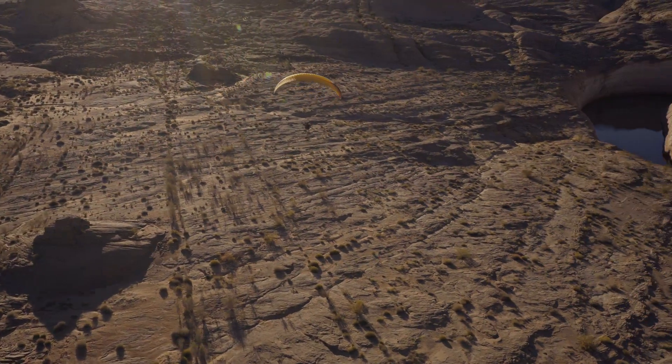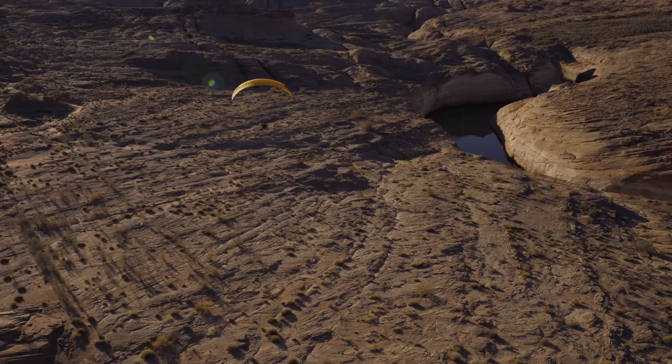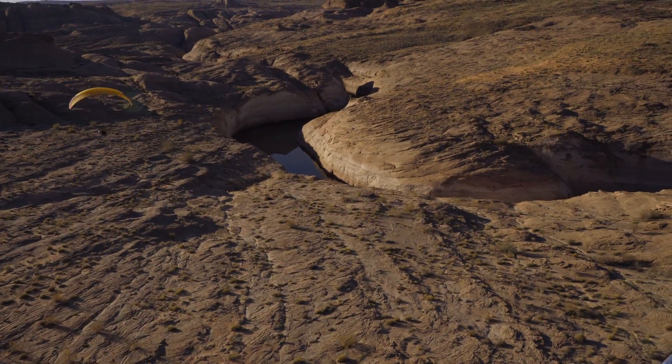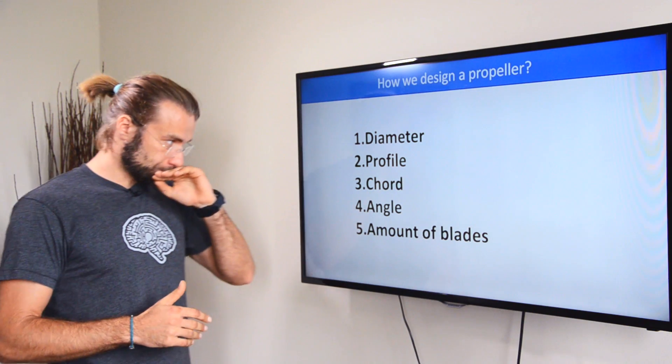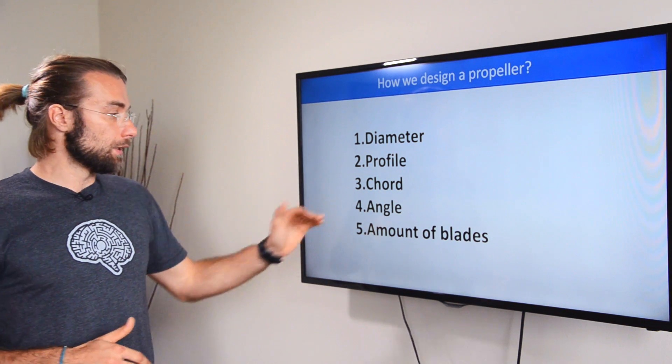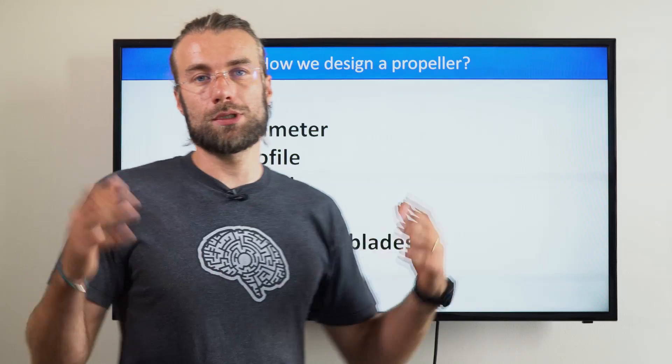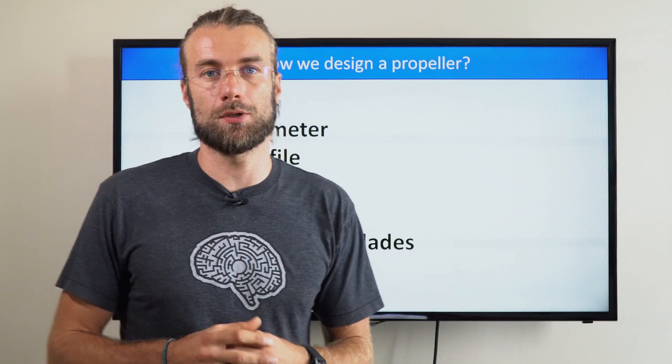There are a few parameters of every propeller that we need to take into consideration when we design a new prop. That is the diameter, profile, cord, angle of attack, and the amount of blades. All these five parameters have to be in sort of a balance.